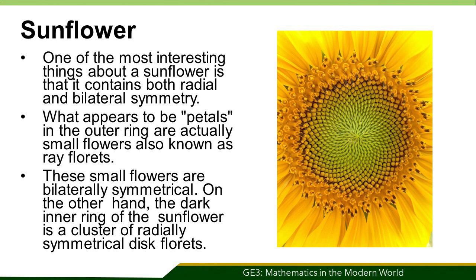Another example is the sunflower. One of the most interesting things about a sunflower is that it contains both radial and bilateral symmetry. What appear to be petals in the outer ring are actually small flowers, also known as ray florets. These small flowers are bilaterally symmetrical. On the other hand, the dark inner ring of the sunflower is a class of radially symmetrical disc florets.